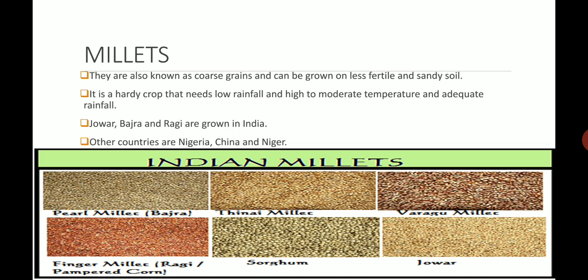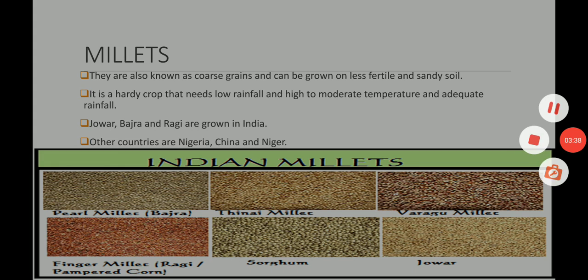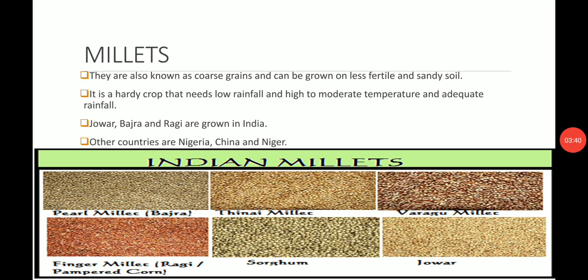Millets are also known as coarse grain, which can be grown on less fertile and sandy soil. It is a hardy crop which needs very low rainfall and high to moderate temperature to grow. Jowar, bajra and ragi are grown in India. Other countries which produce millets are Nigeria, China and Niger, which is situated in north Africa. On the bottom of your screen you can see various images of Indian millets like jowar, bajra, etc.